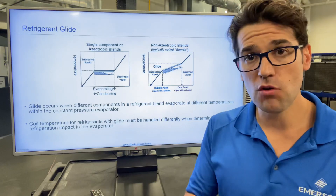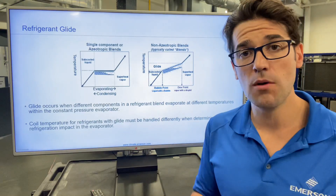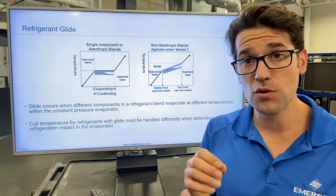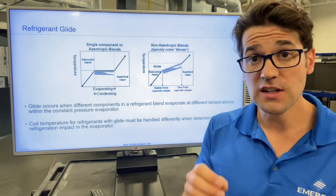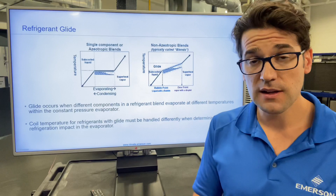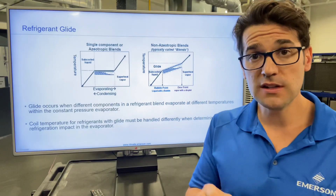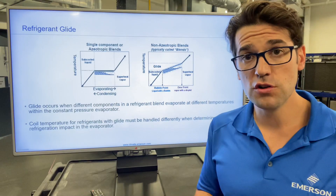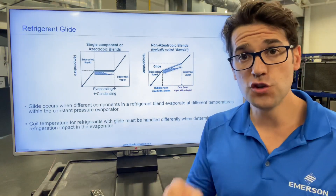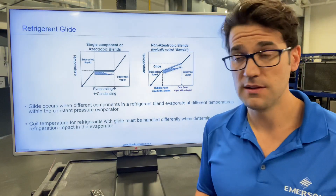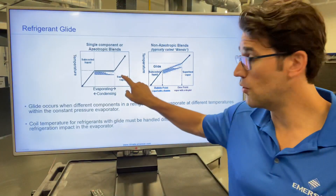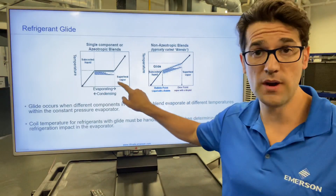And why is this so important? This is so important because when you are setting superheat, you need to make sure you're using the dew point — the vapor point.